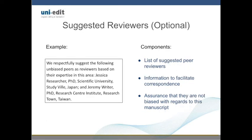Some journals will allow or even prefer submitting authors to include a list of suggested peer reviewers. If this applies in your case, you can provide a list of suggested reviewers and their information for correspondence. You may need to justify why you have proposed these individuals based on their expertise and confirmed their lack of bias.